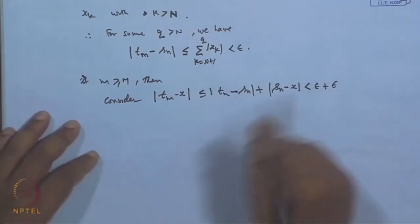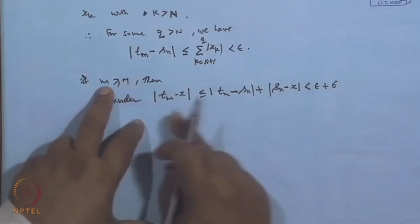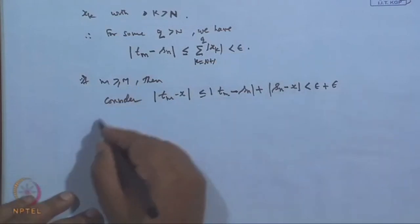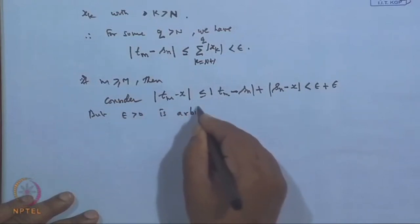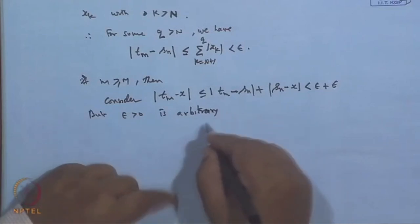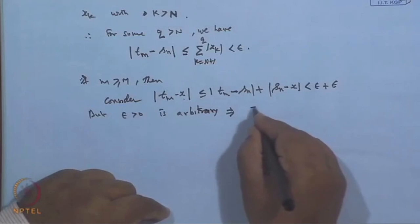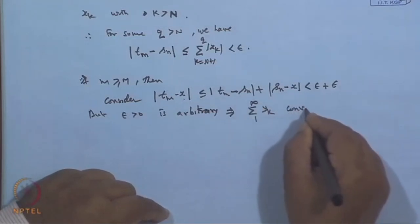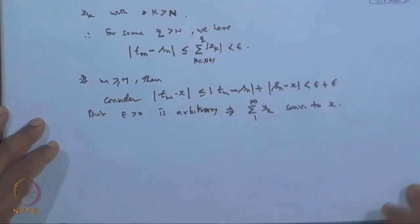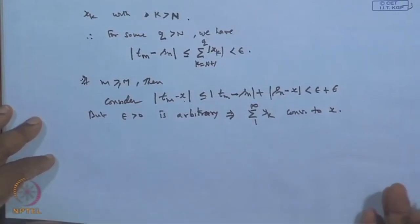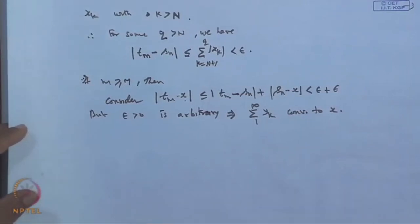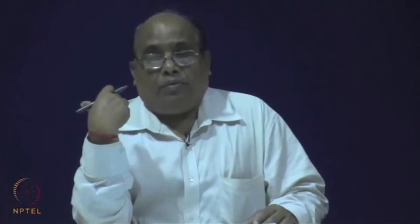So for all m >= M, |T_m - x| < 2*epsilon. Since epsilon is arbitrarily small, as epsilon tends to 0, T_m will go to x. Therefore the series sigma y_k (k=1 to infinity) converges to x. This proves that in the case of an absolutely convergent series, the rearranged series remains convergent and has the same sum as the original one. So we are mostly interested in absolutely convergent series, because the sum remains the same regardless of the order of summation.